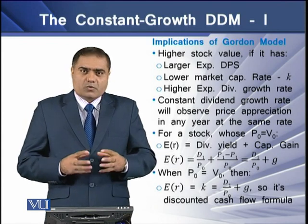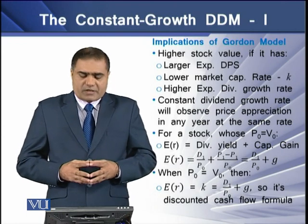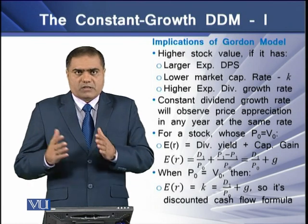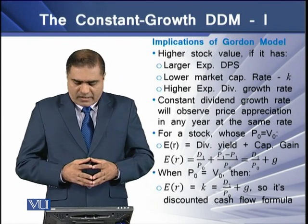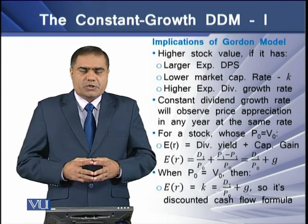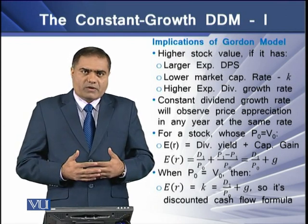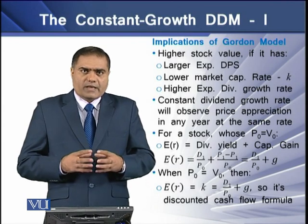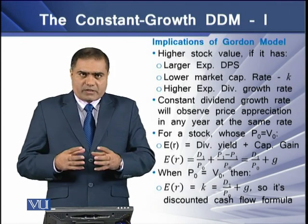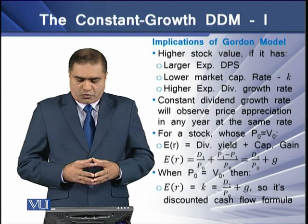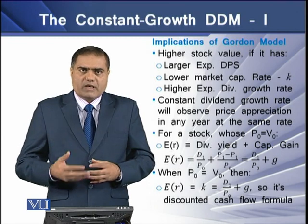For a stock whose market value P0 is equal to its intrinsic value V0, the expected return will equal dividend yield plus capital gain yield. Dividend yield equals D1 over P0, while capital gain yield is the difference between P1 and P0 divided by P0. In other words, the expected return equals D1 over P0 plus G, which is the capital gain yield.